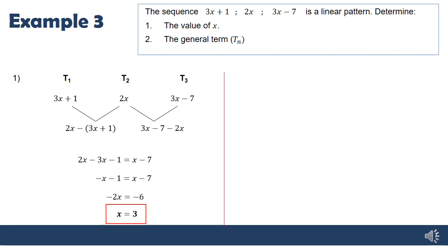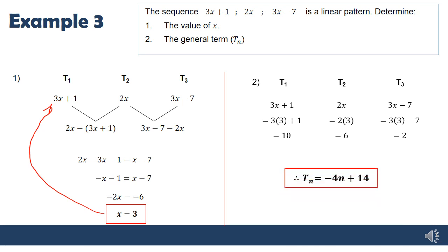They ask for the general term, so once we know x = 3, we substitute back to get the actual number pattern: 10, 6, 2, which gives 9, 5, 1, -3. Now I have a normal linear pattern, and using either method from example 1 or 2, we should get the linear pattern general term of -4n + 14.